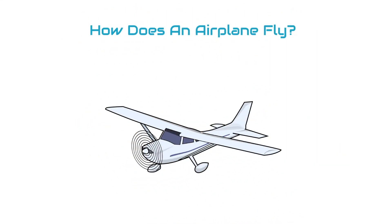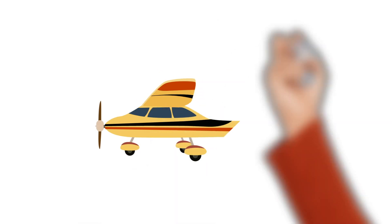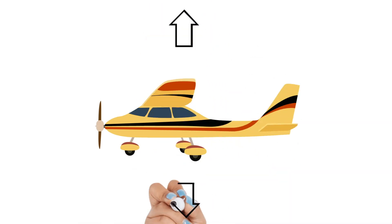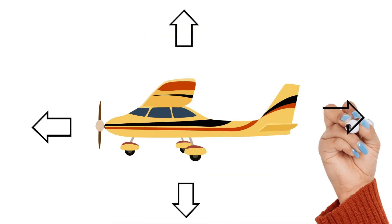How does an airplane fly? When an airplane is in flight, there are four main forces at work: Lift, weight, thrust, and drag.